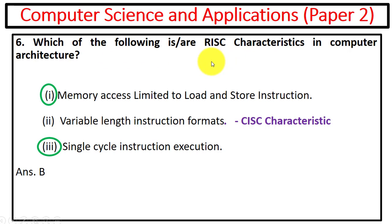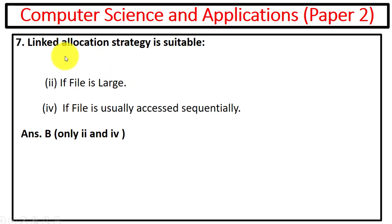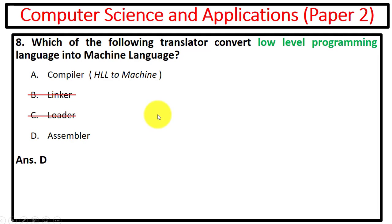Next question is linked allocation strategy is suitable if file is large and if file is usually accessed sequentially. Next question is which of the following translator convert low level programming language into machine language. Linker and loader are for linking and loading, so they are not the correct option. Now we have compiler and assembler. We use compiler to convert high level language to machine level language, so this one is also incorrect option because we have to convert low level language into machine language. So the answer is assembler.